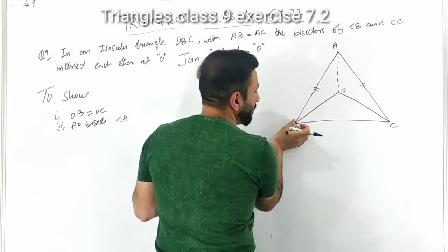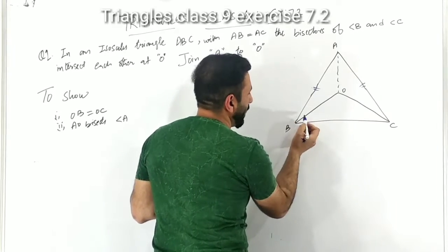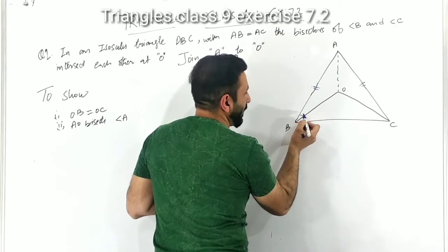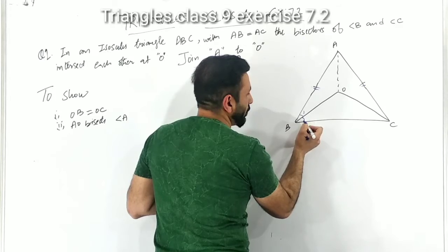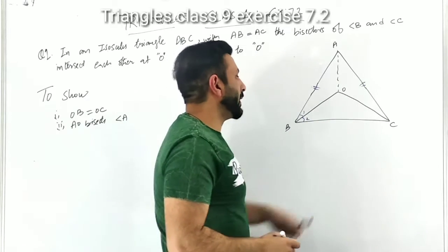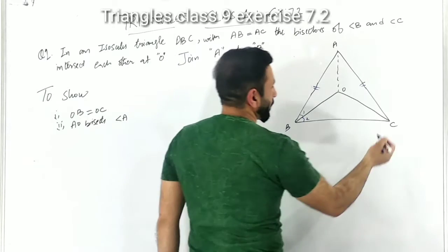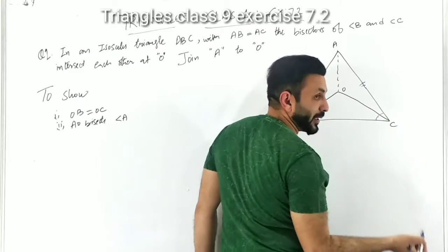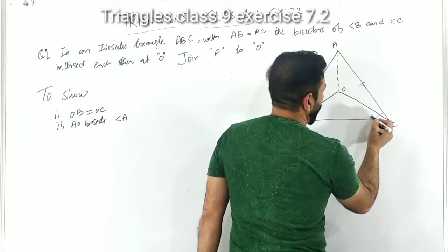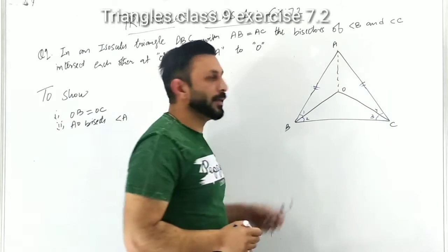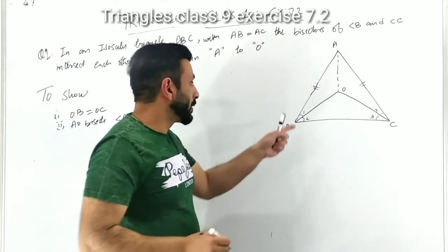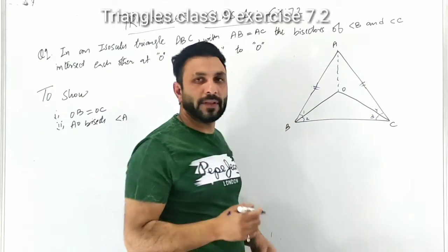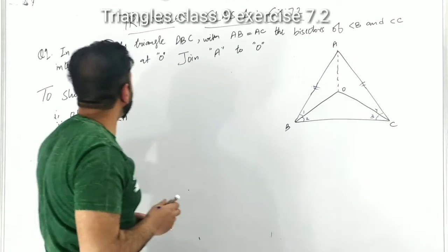We are given angle B, which is bisected — the bisector divides it into angle 1 and angle 2. Similarly, angle C is bisected by OC into angle 3 and angle 4. For example, if angle B is 60 degrees, then angle 1 is 30 and angle 2 is 30.